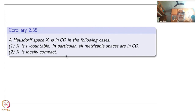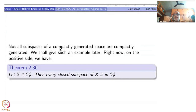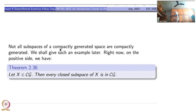So local compactness immediately gives you LPT. First countability also gives you LPT because a sequence converging to a point union with the limit point is always compact. Not all subspaces of compactly generated spaces are compactly generated — by this I mean that compactly generatedness is not hereditary. To see such an example we have to wait a little bit; it is not coming so easily.